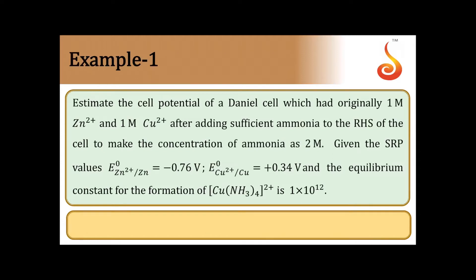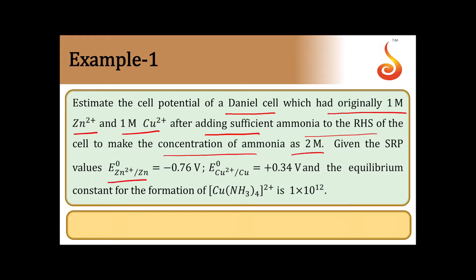Estimate the cell potential of Daniel's cell which had originally 1 molar zinc ions and 1 molar copper ions, after adding sufficient ammonia to the RHS of the cell to make the concentration of ammonia 2 molar. Given: SRP of zinc = -0.76V, SRP of copper = +0.34V, and the equilibrium constant for the formation of the complex is also given.